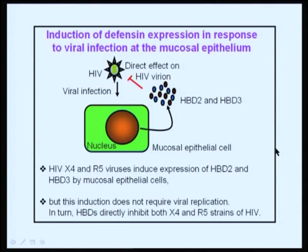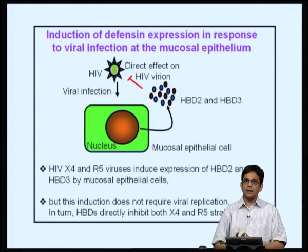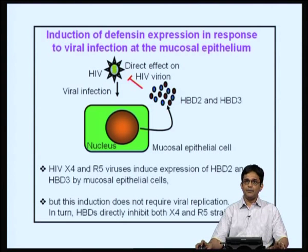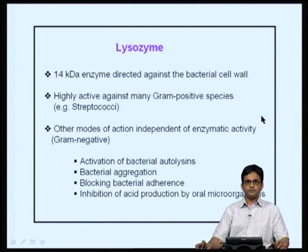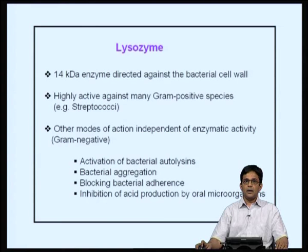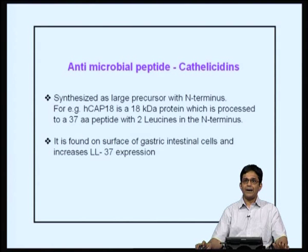As I was saying, the production of human beta-defensin 2 and 3 in some cases requires viral replication, whereas in other cases it does not. Nevertheless, defensins play an important role in antimicrobial immunity. Lysozyme is highly active against gram-positive species mainly because the muramyl peptide bond it cleaves is present primarily in gram-positive bacteria. Lysozymes also activate bacterial autolysins, result in bacterial aggregation, and play important antimicrobial roles. Cathelicidins are produced as larger precursors and trimmed down; they play an important role in the intestinal lumen and are present on the surface of gastrointestinal cells.